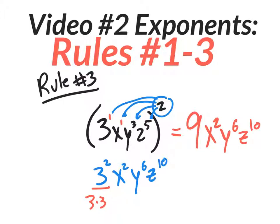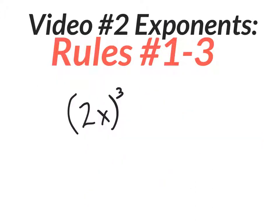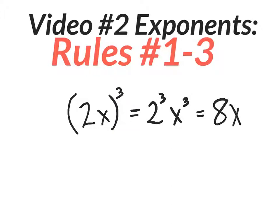Here's another one — it's actually super easy. You just distribute the exponent to each term and your answer is two to the third x to the third. Two to the third is eight because two times two times two is eight. So you have eight x to the third.